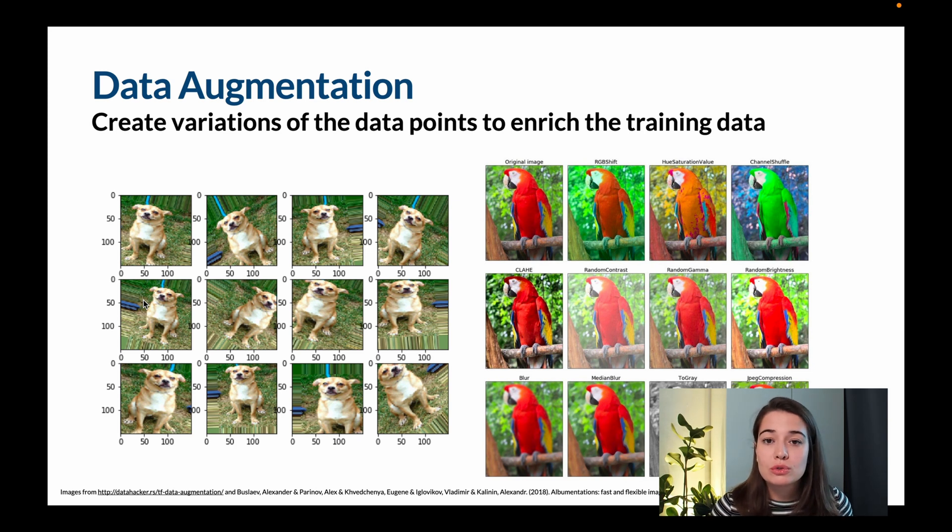Or if you want your model to be tolerable to the changes in exposure, saturation, or even just colors in general, then you can apply some other transformations to your data, increase the saturation, increase the hue, invert the colors, make it black and white, and then feed all of this data into your network, so that it will be able to still recognize that this is a parrot, even if the colors are completely off. And that's how data augmentation will help us regularize and overcome overfitting.